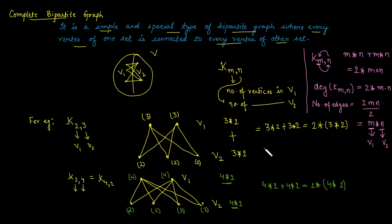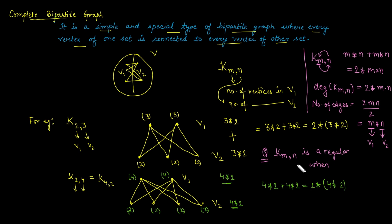The next question is: when is the complete bipartite graph Km,n a regular graph? A regular graph means the degree of each vertex is the same. The complete bipartite graph with M vertices in one set and N vertices in the second set is regular when M is equal to N.